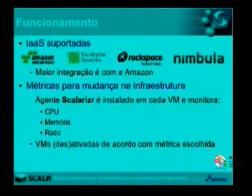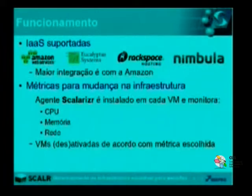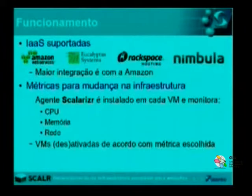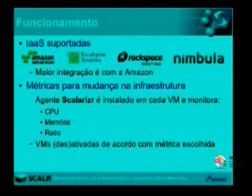Com relação às métricas que o Scalr utiliza para fazer mudanças na infraestrutura — como ele detecta que um servidor está sobrecarregado e precisa acrescentar uma nova VM — ele tem um agente chamado ScalrWiser instalado em cada uma das VMs. Esse agente fica constantemente monitorando CPU (percentual de uso), memória e rede, permitindo ao Scalr acrescentar ou desativar máquinas virtuais de acordo com a métrica que você escolhe para o crescimento ou redução da nuvem.